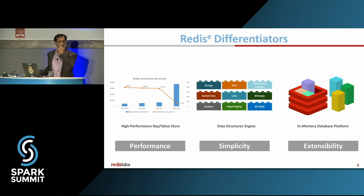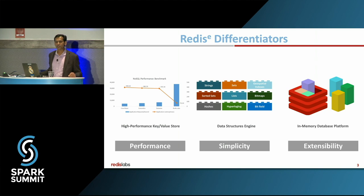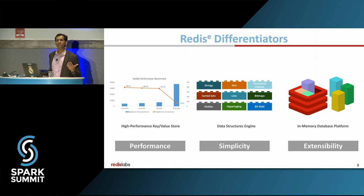The fundamental differentiators and the reason why Redis has become so popular come down to three simple things. The very first one is performance. Most of you probably think of it as a very fast cache, and it certainly is a lot more than a cache. Redis can deliver hundreds of thousands of operations per second — we've exceeded a million operations per second at sub-millisecond latency.